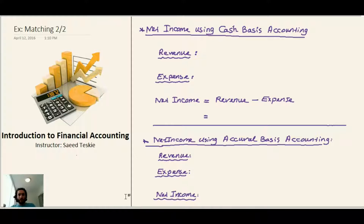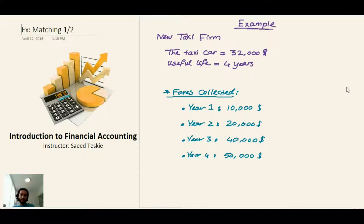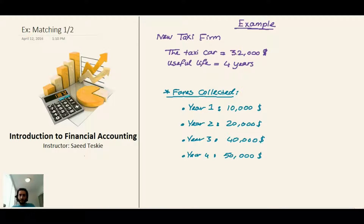In this video we'll talk about an example showing the difference between cash basis accounting and accrual basis accounting. We have an example of a taxi firm. Assume you are planning to start a taxi firm. You bought a taxi car for $32,000 and its useful life is four years.